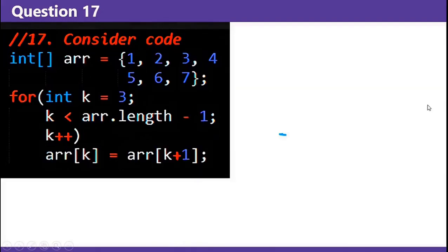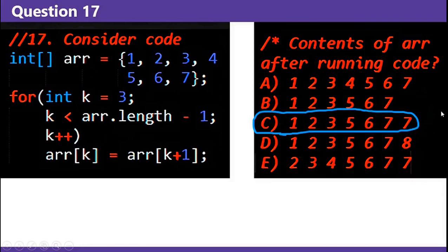Therefore, the answer is D. The code for question 17 copies adjacent array elements to the current element, starting from index 4 and stopping one before the end. The answer is C.